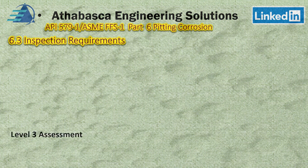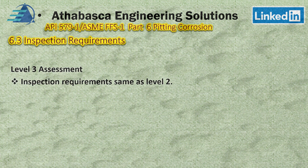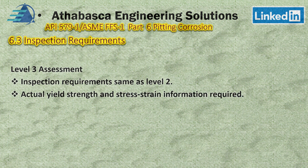For a Level 3 assessment, you build from Level 2 and follow all those requirements. Additionally, you must use the actual yield strength and the stress-strain information for the curve. In Section 2 of the ASME pressure vessel code, there is some stress-strain data available if you are looking for those kinds of numbers.